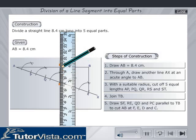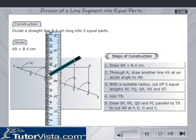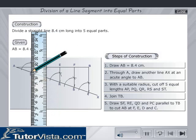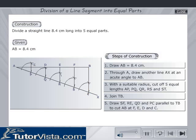Draw RE, QD, and PC parallel to TB to cut AB at F, E, D, and C respectively.